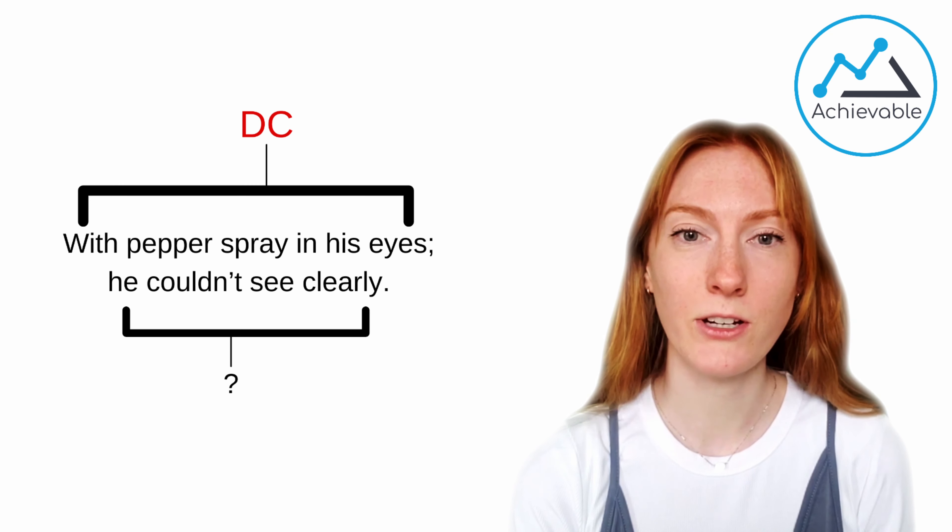You might have spotted that the first clause, with pepper spray in his eyes, is a dependent clause. I like to think of it as if I couldn't put a period at the end of that clause, then that tells me this is probably a dependent clause.